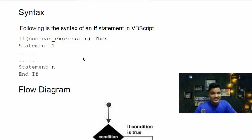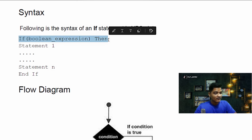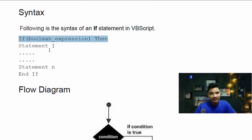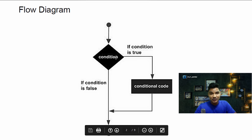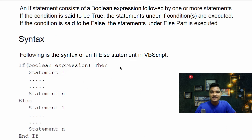First, let's discuss the syntax for decision-making statements. For the IF statement, we write 'If' then our boolean expression, then we write our statements. Multiple statements can be written: statement one, statement two, statement three, and so on. We end the IF statement with 'End If'. The flow diagram looks like this: if the condition is true, this code will be executed; otherwise it will pass.